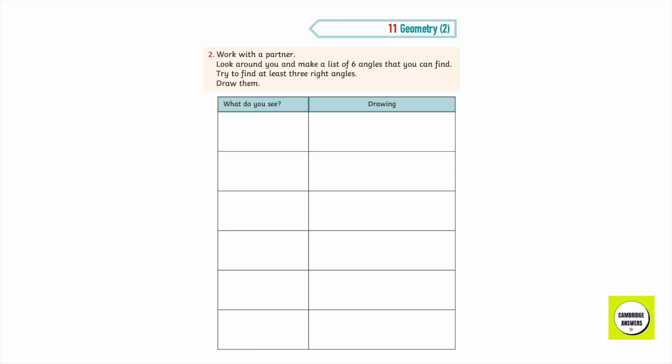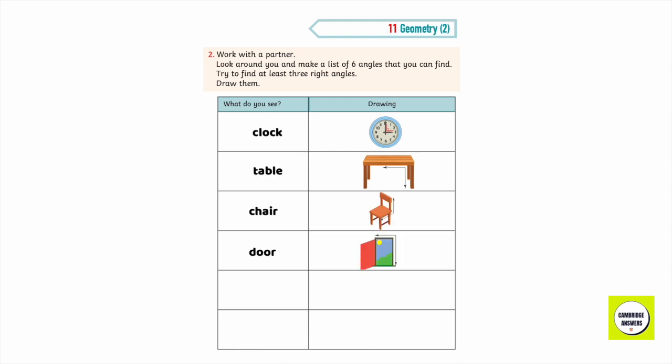How many right angle turns did he make altogether? Work with a partner. Look around you and make a list of six angles that you can see. Try to find at least three right angles. Draw them. What can you see? You can see a clock, a table, chair, door, scissors, ice cream cone.